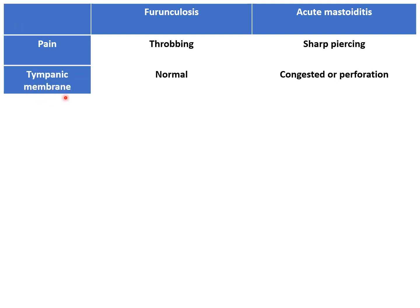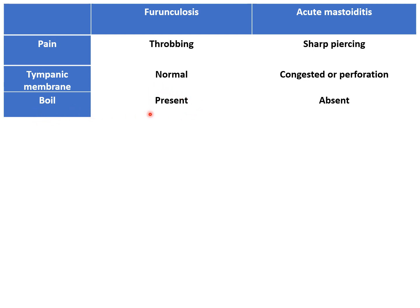On otoscopic examination, the tympanic membrane will be normal in furuncylosis because this is a disease of the external ear. While in acute mastoiditis, the tympanic membrane may be congested or perforated depending on the stage in which the patient presents. A boil or furuncle is present in furuncylosis — it is an infection of the hair follicle — while it is absent in acute mastoiditis. The external auditory canal examination is otherwise normal in acute mastoiditis, except that pus or discharge may be present, but there is no boil or furuncle.